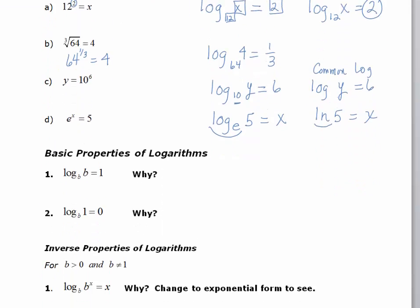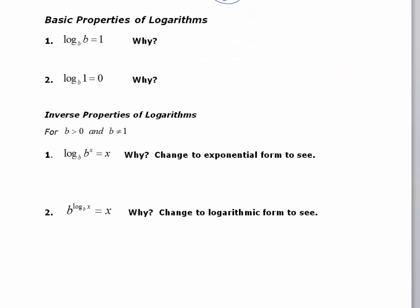Let's use our knowledge of converting back and forth from log form to exponential form to look at a few basic properties. The first property says if you have the log of b, base b, it's equal to 1. What they're really asking is: what exponent do I put on b to give me b? The answer is 1. It's easier to see if we convert to exponential form: b to the 1 equals b. That makes sense.